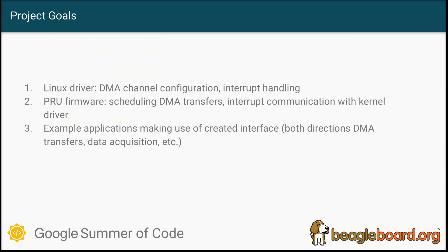This project aims to provide support for bidirectional DMA transfers between PRU and the A8. There are three main parts that will make up the project: a Linux kernel module for DMA channel configuration and handling of the interrupts; PRU firmware that will schedule the transfers; and example applications making use of bidirectional DMA transfers, for example collecting data from sensors or controlling various devices.